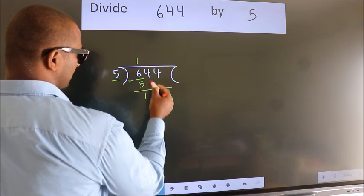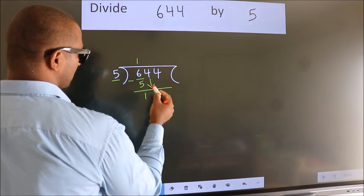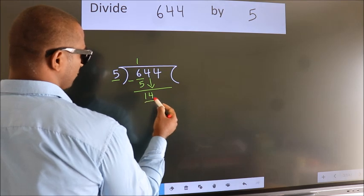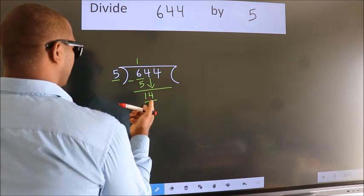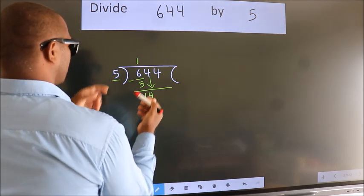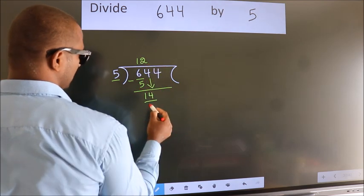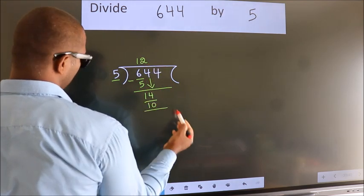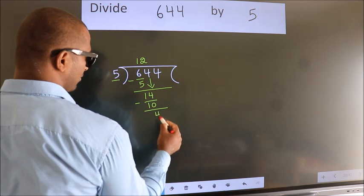After this, bring down the beside number. So 4 down. So 14. A number close to 14 in 5 table is 5 twos 10. Now we subtract. We get 4.